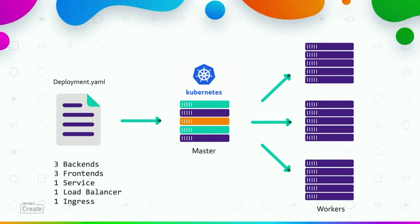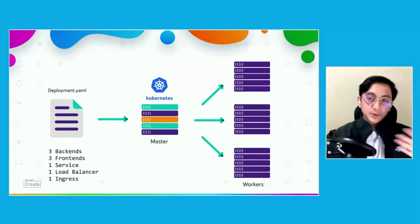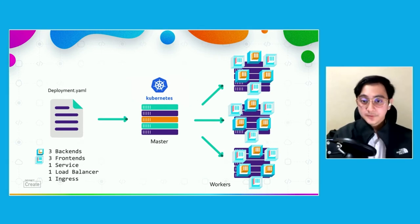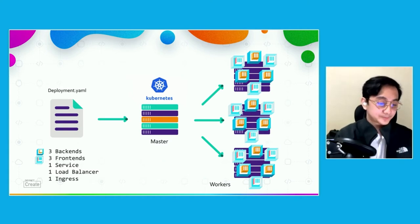Take a simple deployment — a basic web application. In this deployment I want three backends, three frontends, a service, a load balancer, and an ingress. I also want it distributed with a replica set of three, so everything is replicated into three different containers or pods. Kubernetes takes that information and enforces that specific state — backends, frontends, service, load balancer, and ingress all duplicated three times.